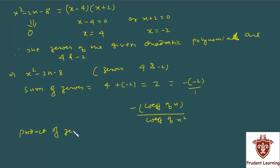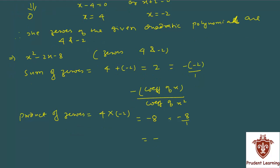Product of zeros: dono zeros ka product nikala, which is 4 × (−2) = −8. Aur −8 ko aap likh sakte hain as −8/1. Ab dekhiye: pura −8 jo hai woh aapka constant term hai. Toh yahan likhenge: constant term / (coefficient of x²) — jahan 1 x² ka coefficient hai. So product of zeros = constant term / coefficient of x². Humne poora question solve kar liya.